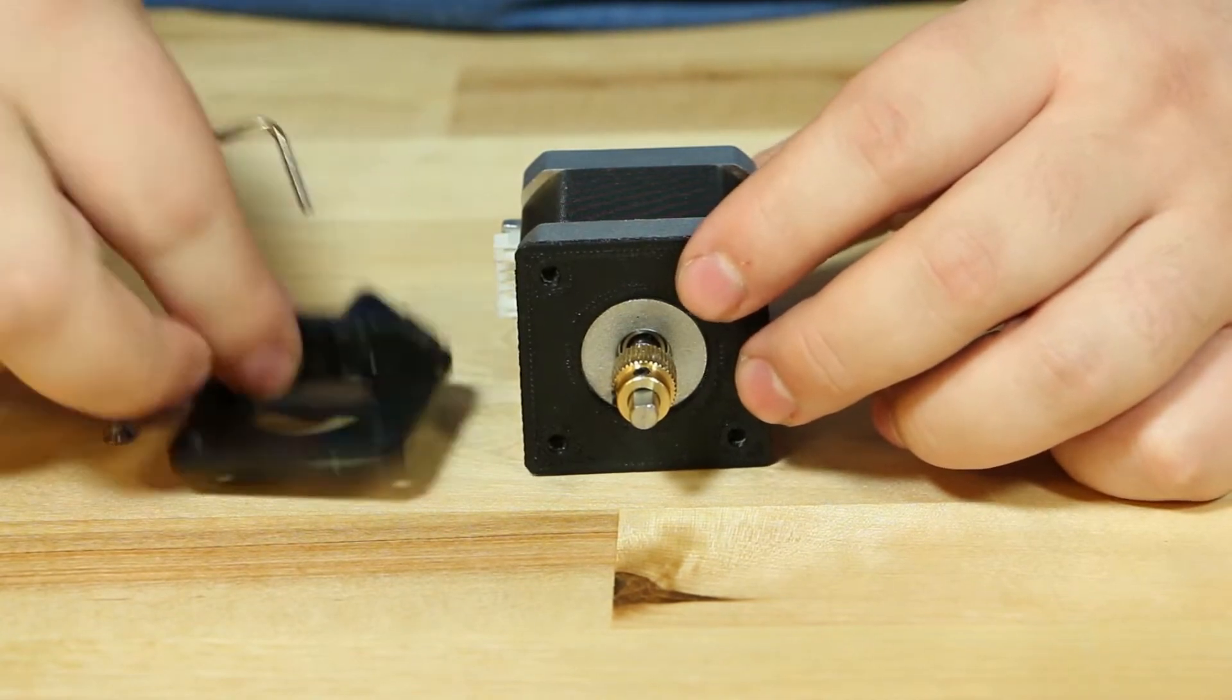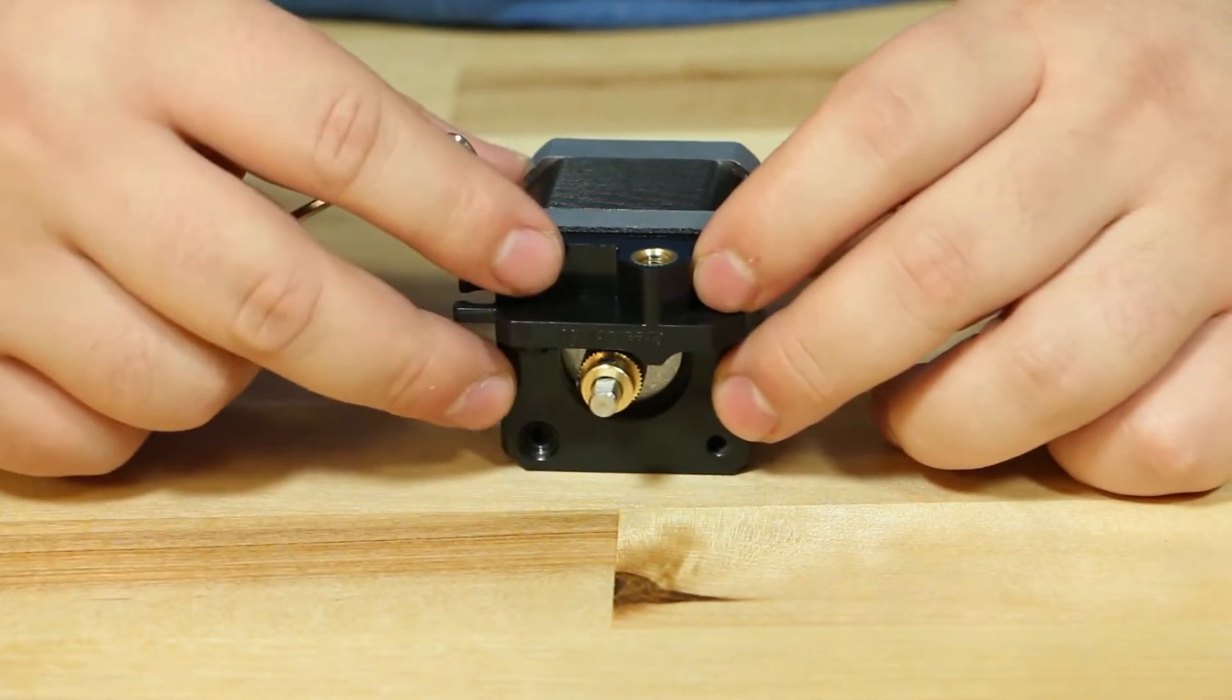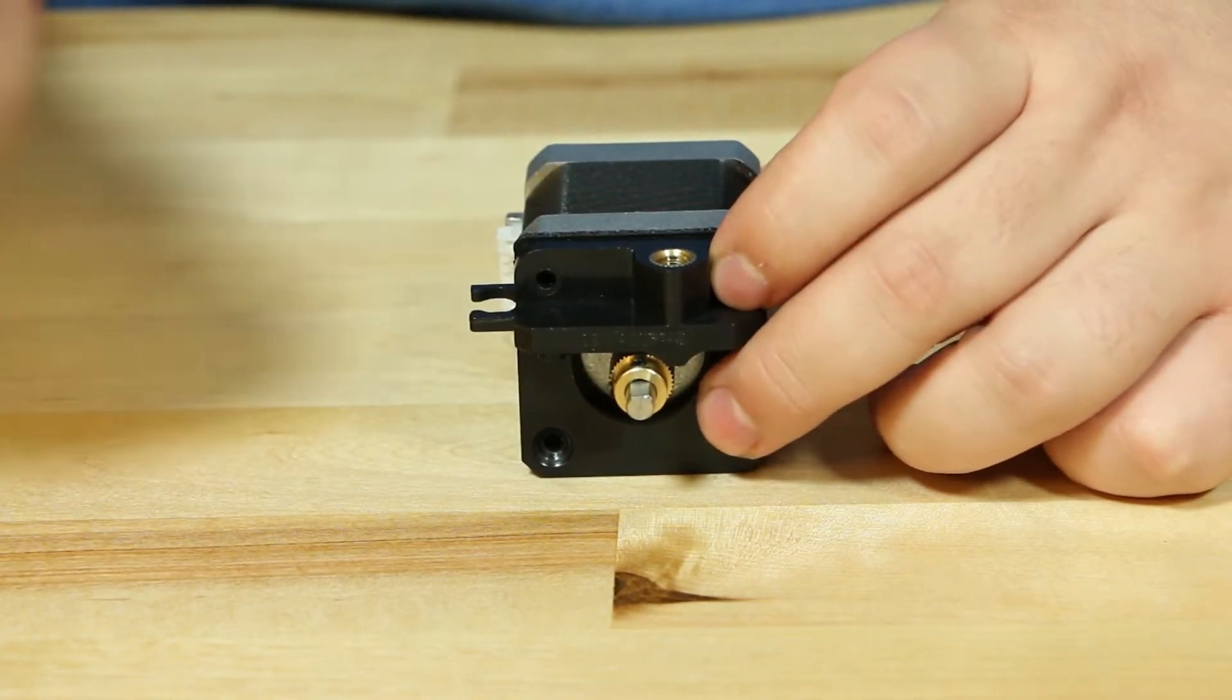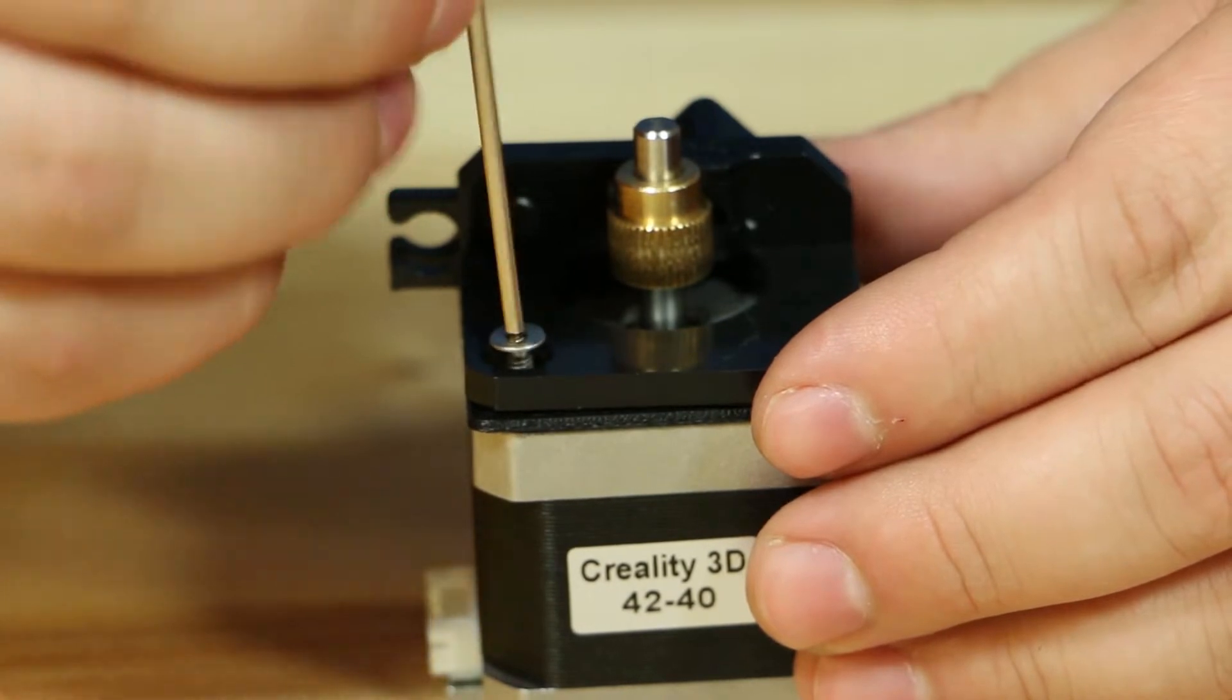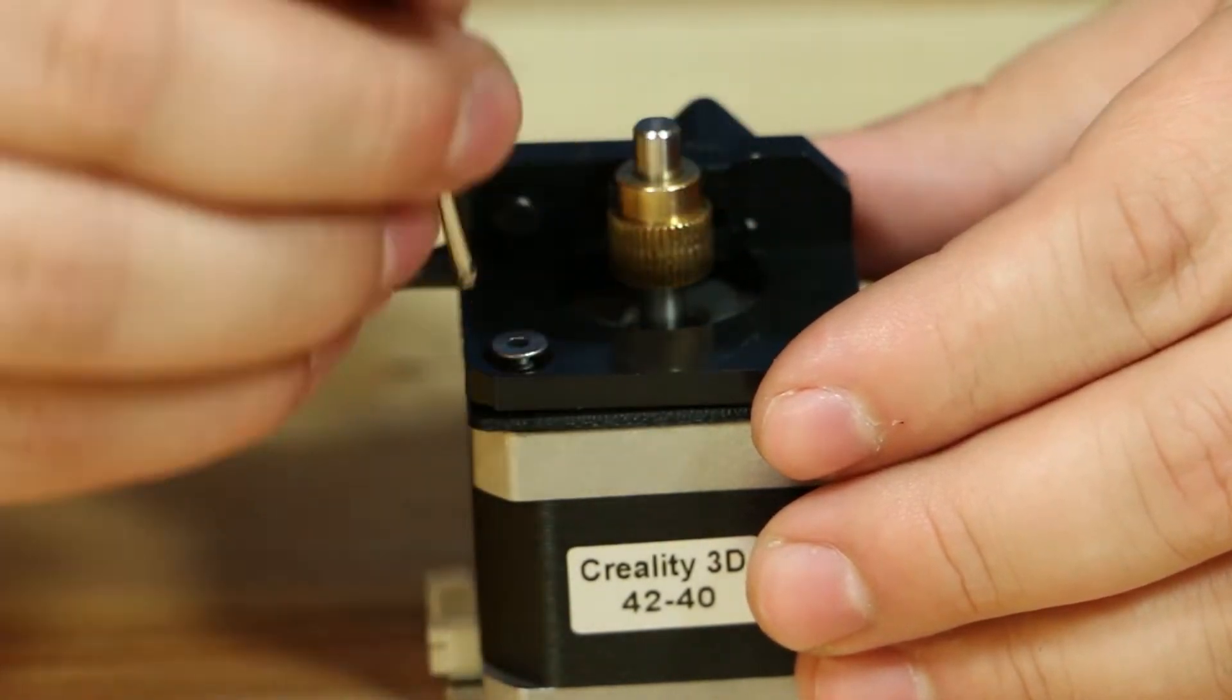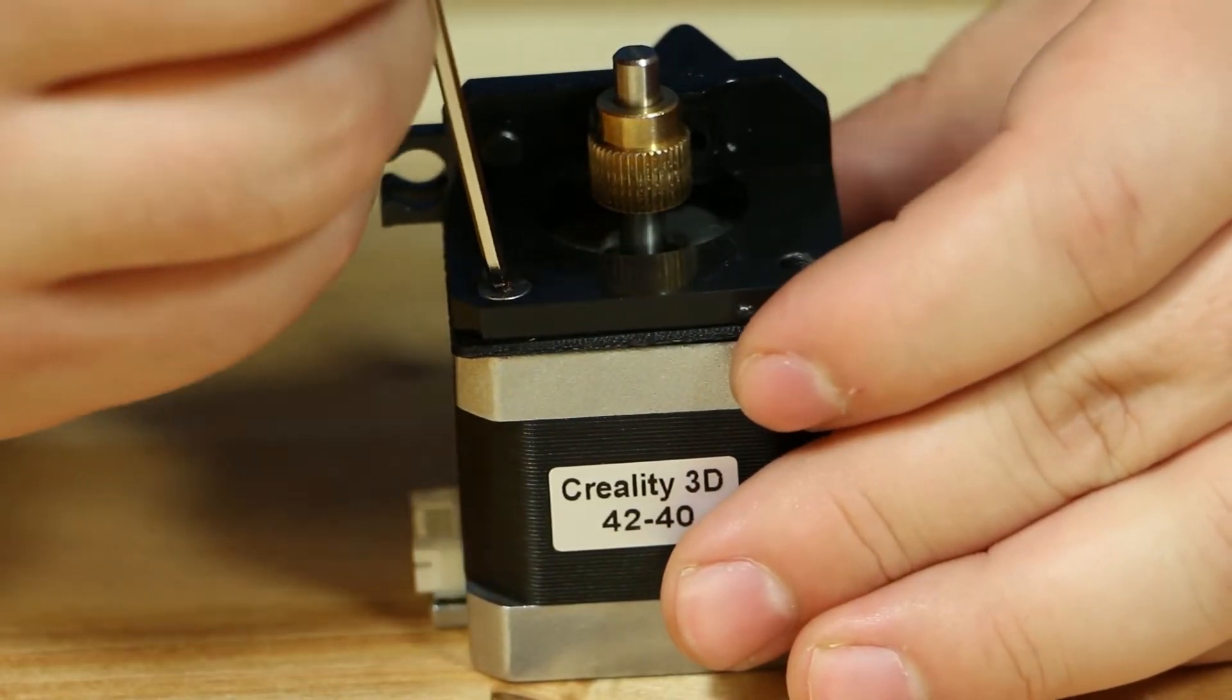After that, place the extruder mount on with the bowden coupler end facing up. Then, place the pan head screw that was in the extruder mount earlier into the bottom left of the motor. Make sure it is snug but not over tight. Make sure that you can also still see the holes all the way to the motor.